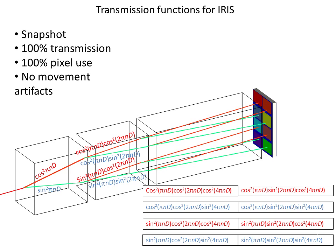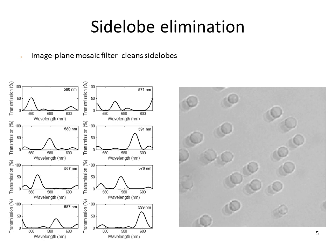One of the problems with IRIS is the existence of sidelobes. Here you can see the main lobe and the other spectral sidelobes. This is the transmission of the 8 bands of IRIS, and on the right you can see an image of red blood cells.